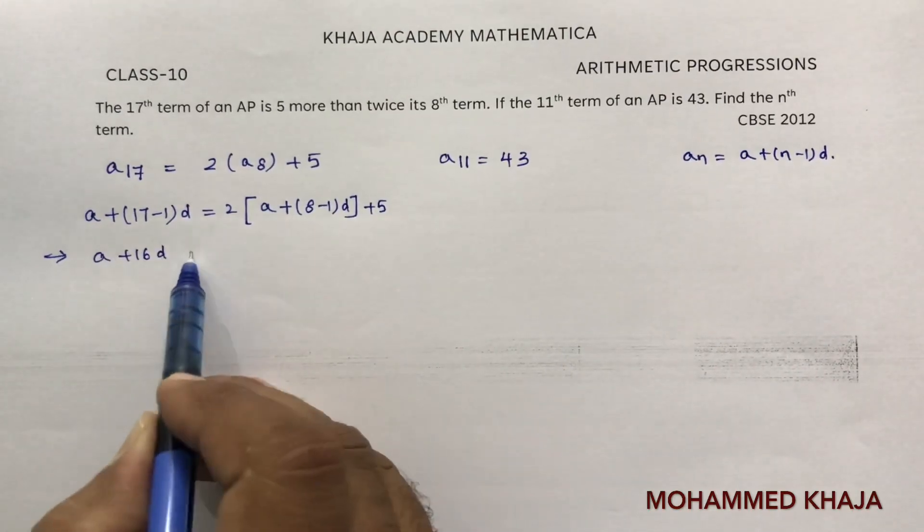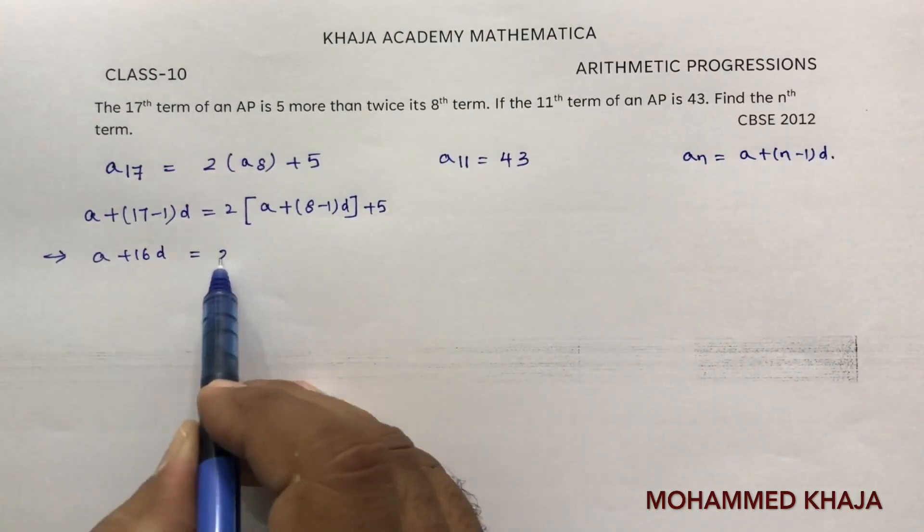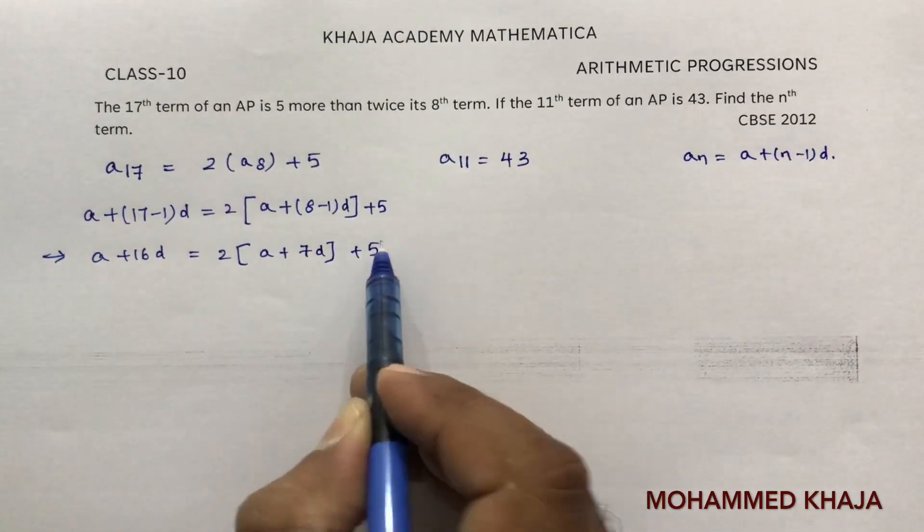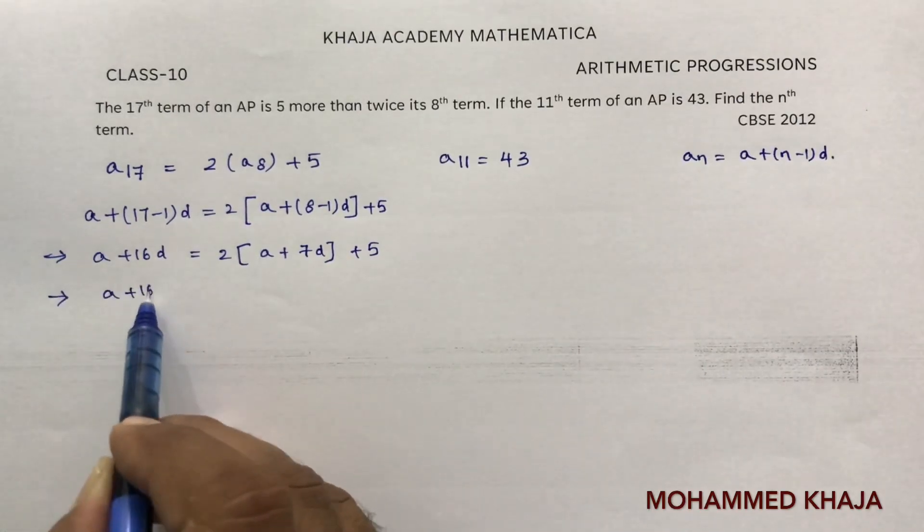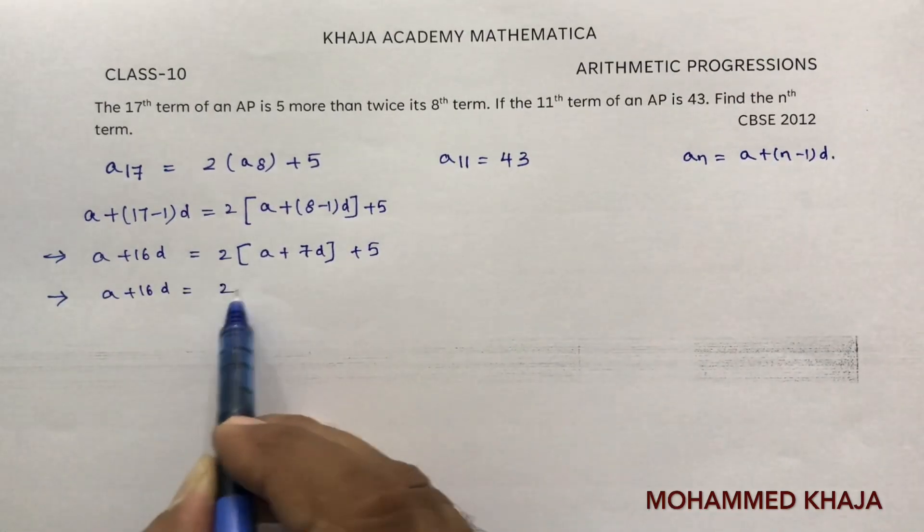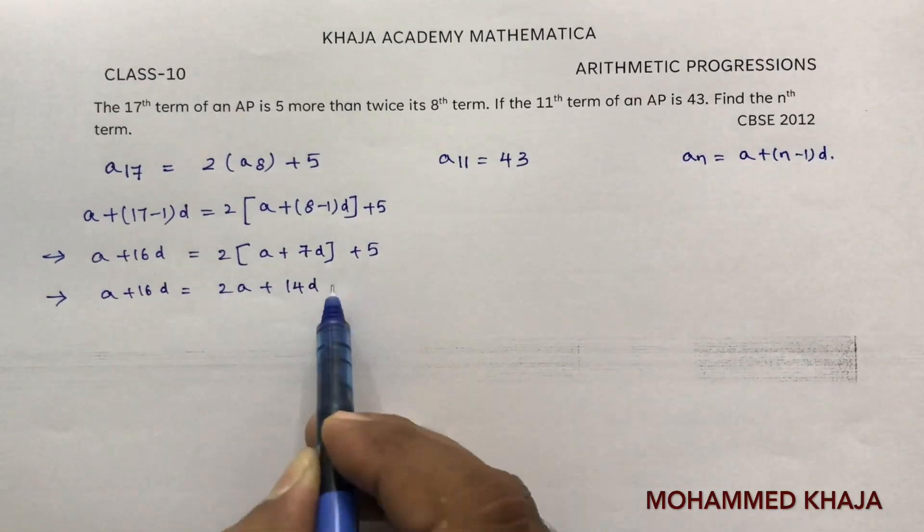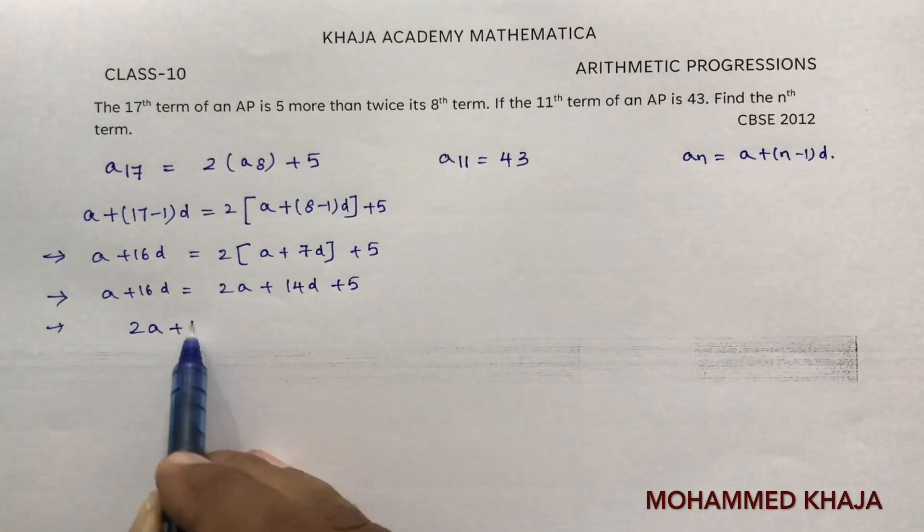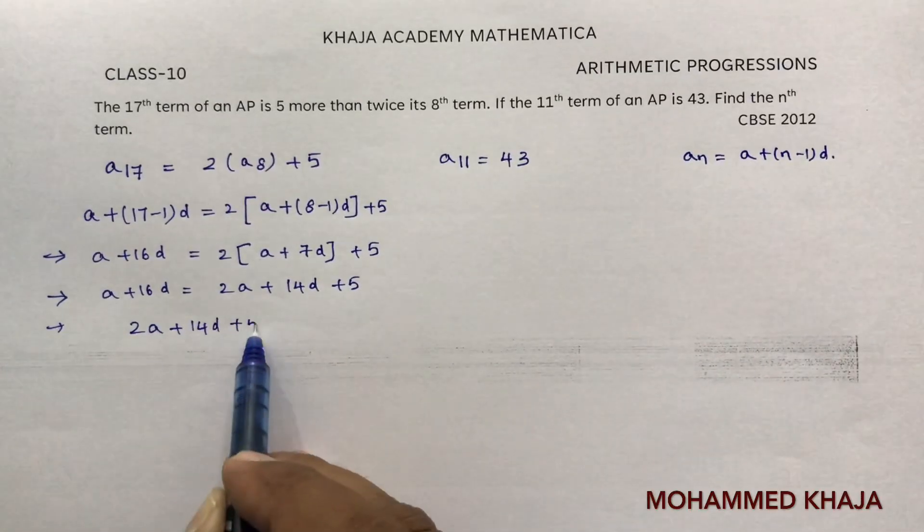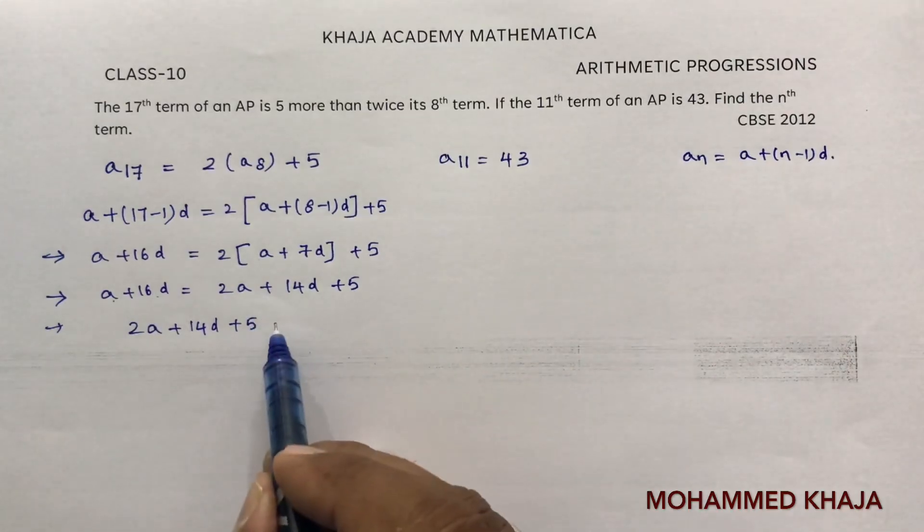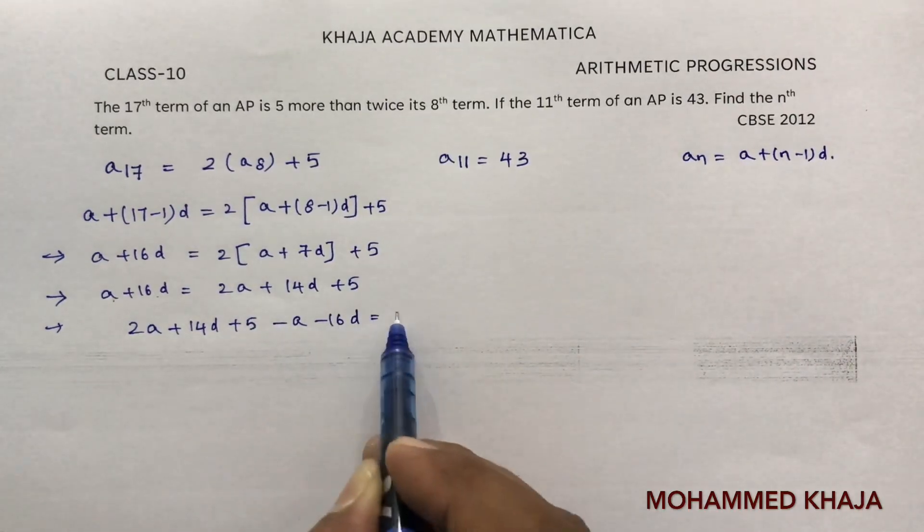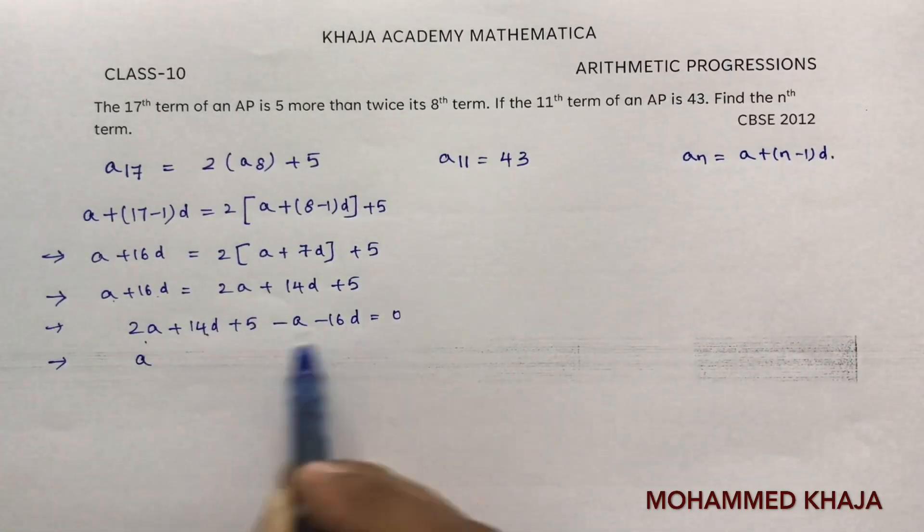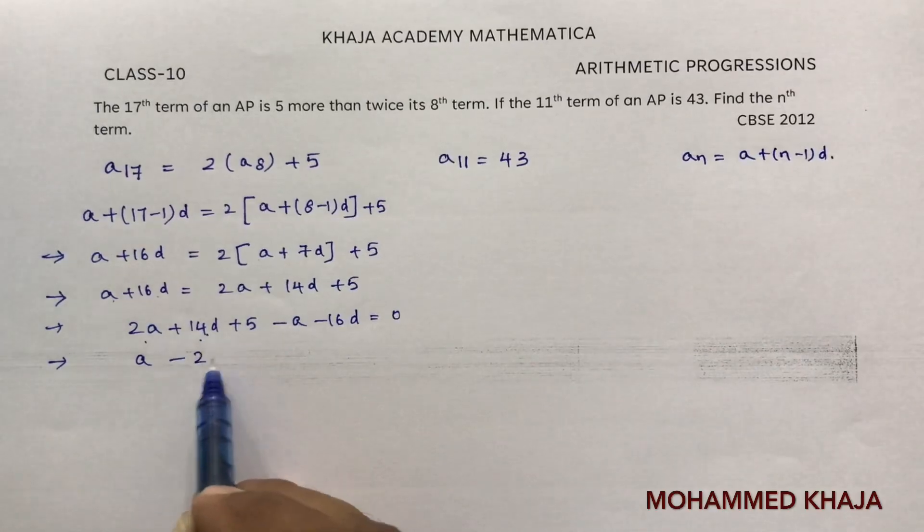The 8th term is a plus 7d plus 5. So a plus 16d equals 2a plus 14d plus 5. I will transpose these values to the right side, so 2a minus a is a, and 14d minus 16d is minus 2d. So a minus 2d equals minus 5.